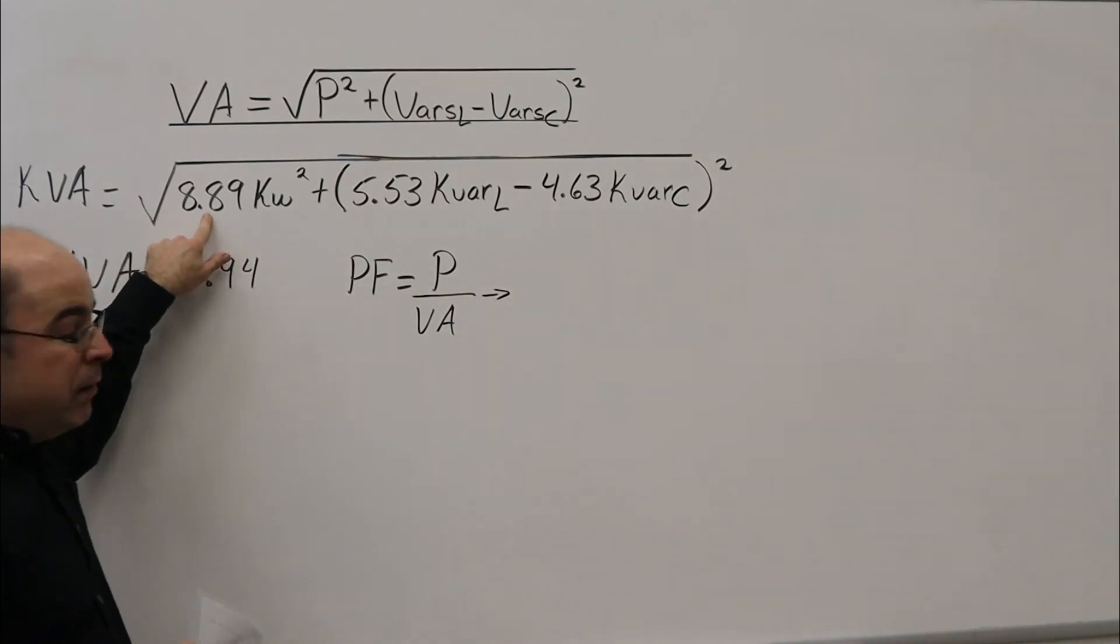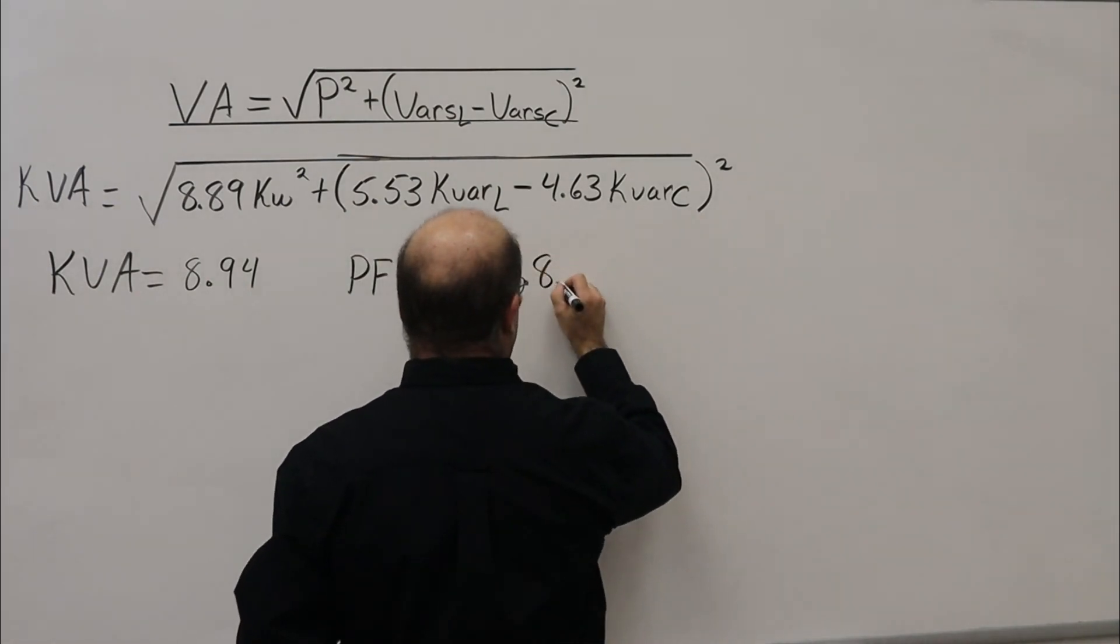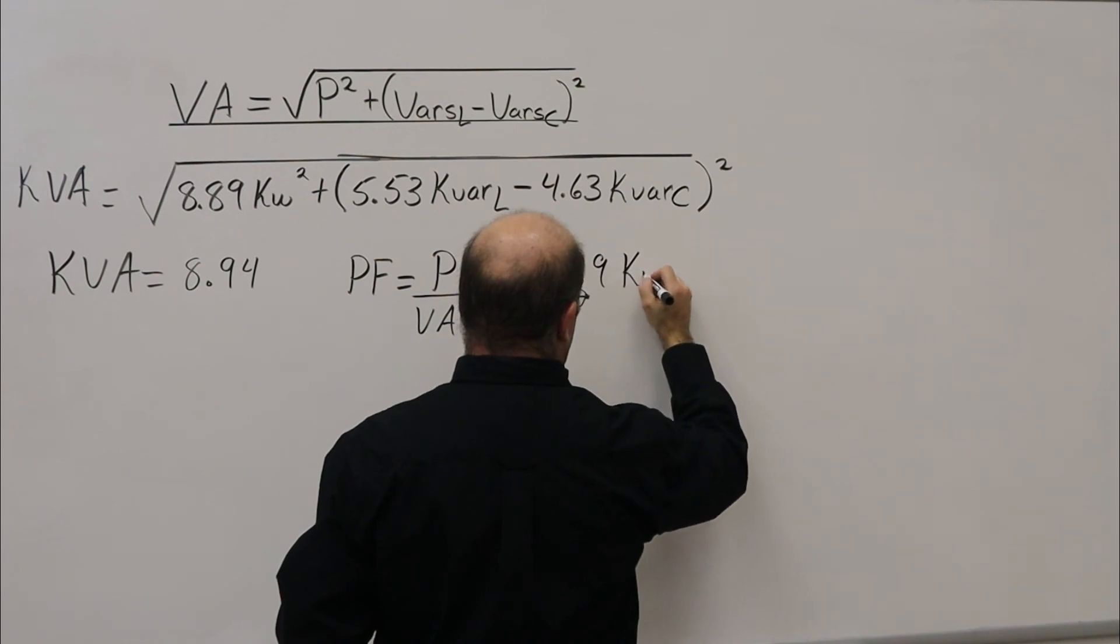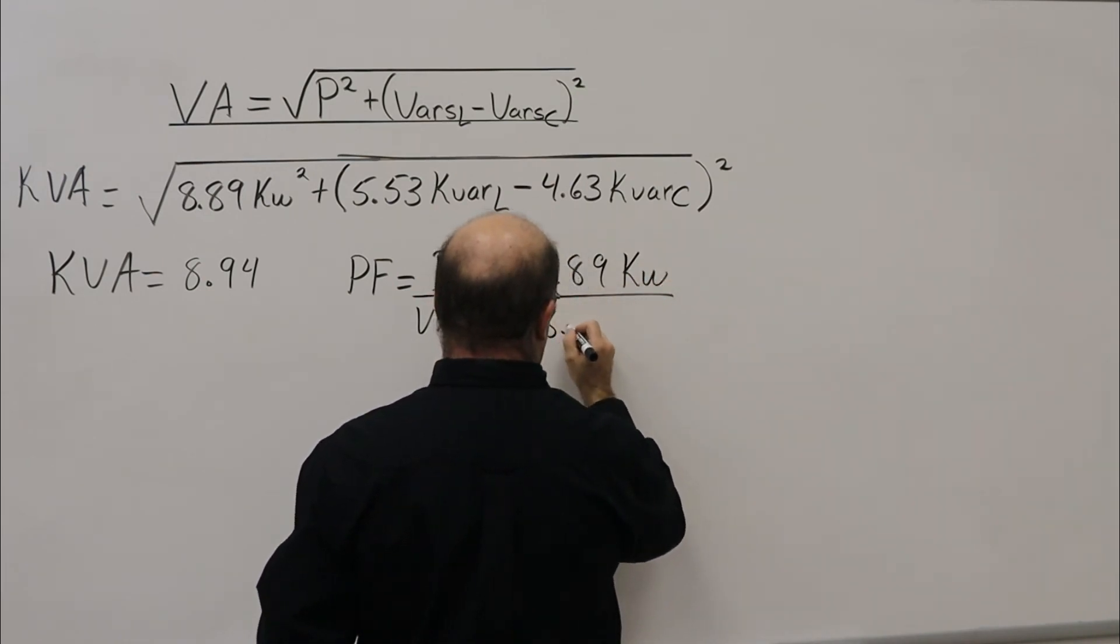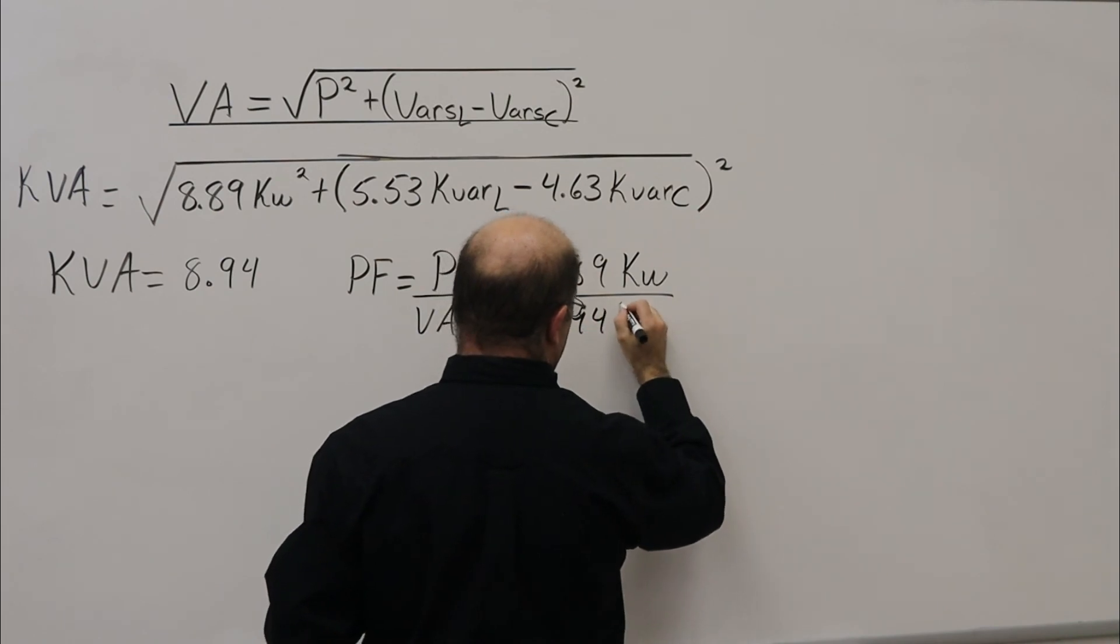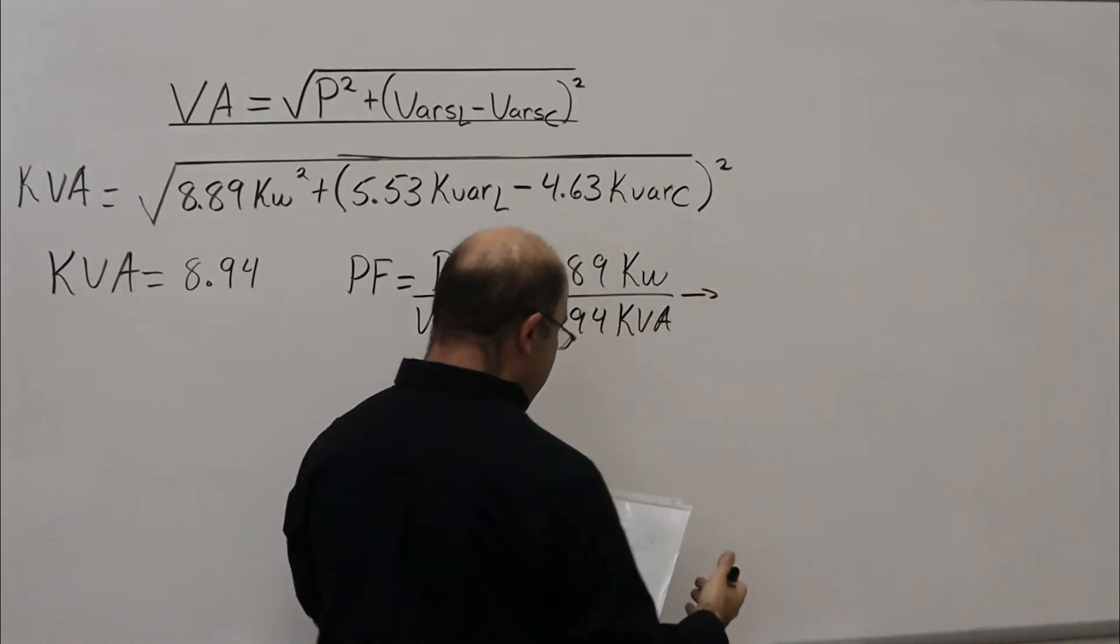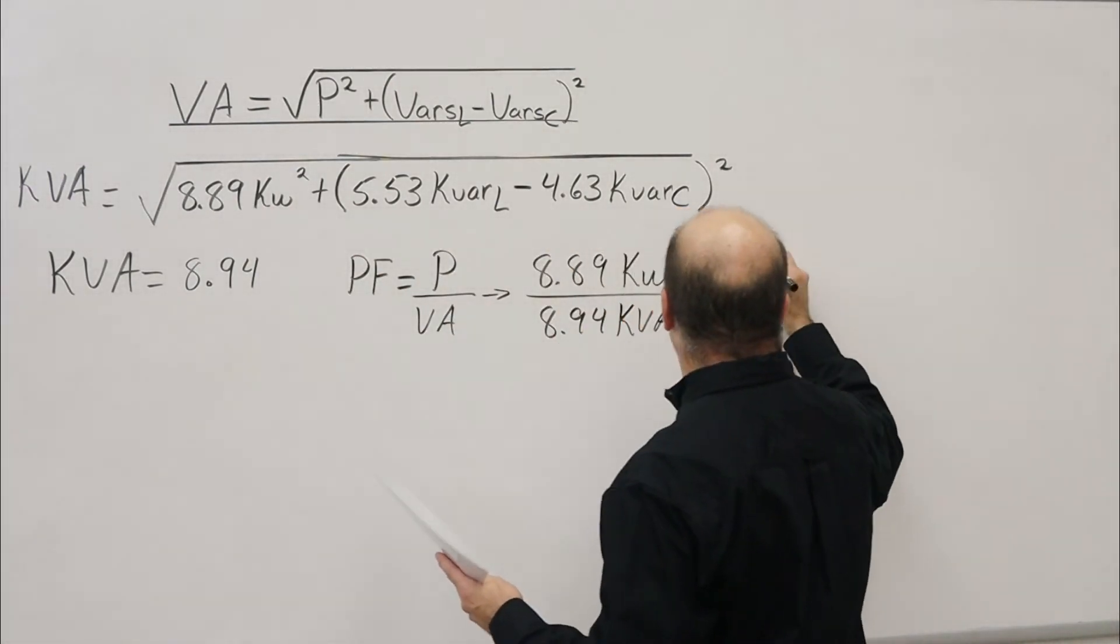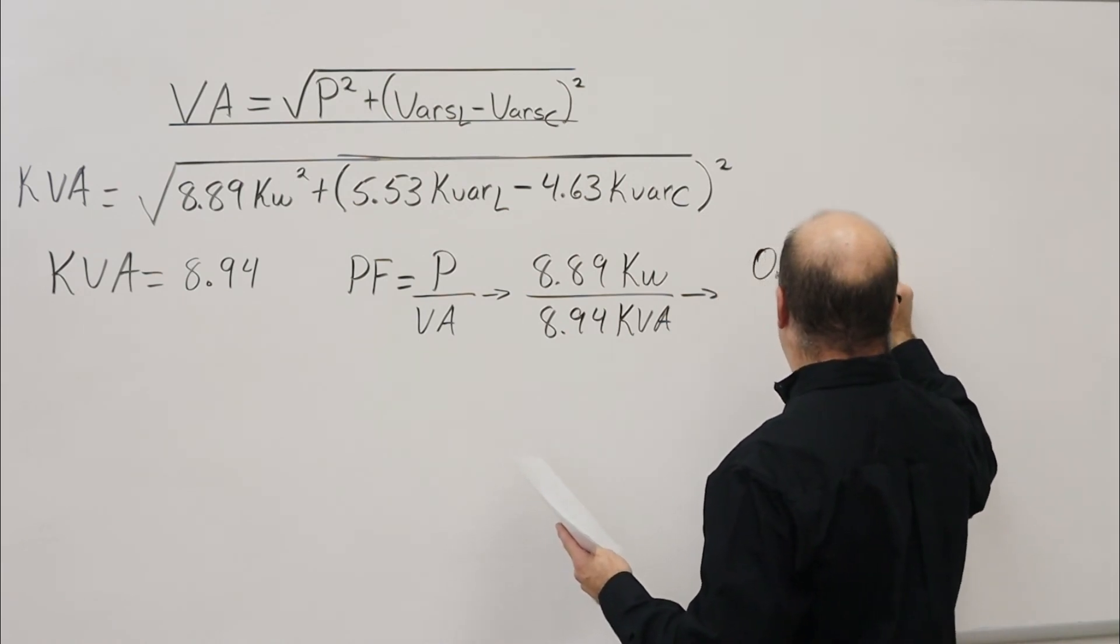8.89 kilowatts divided by 8.94 kVA gives us a result of 0.9949.